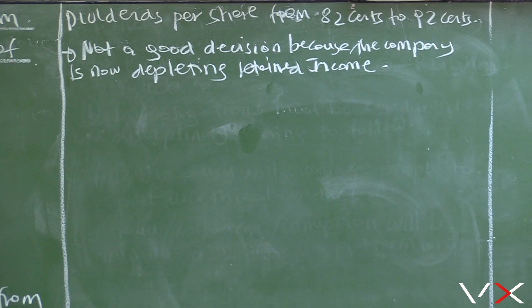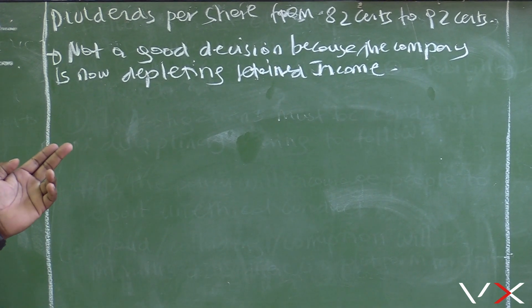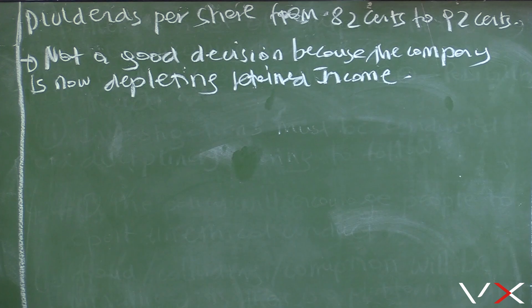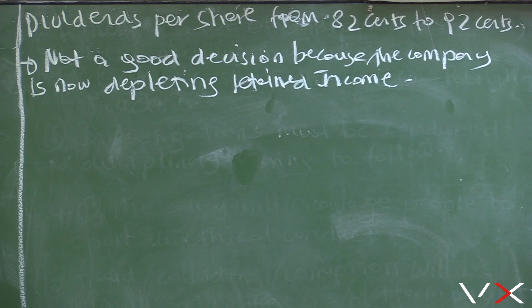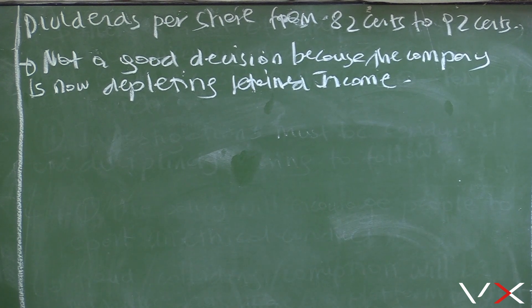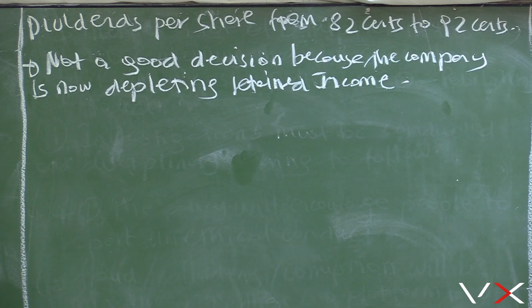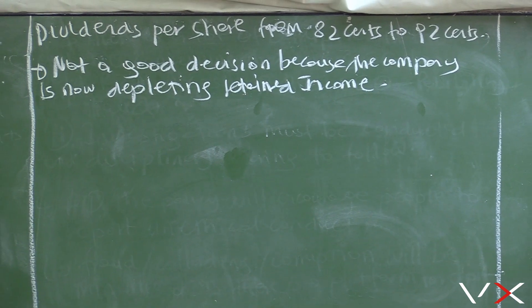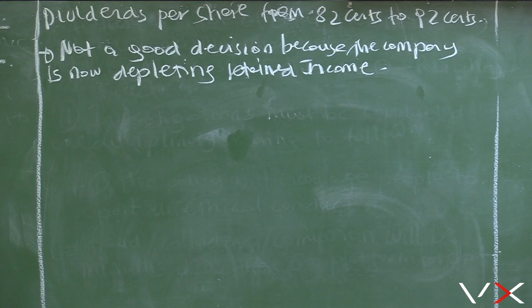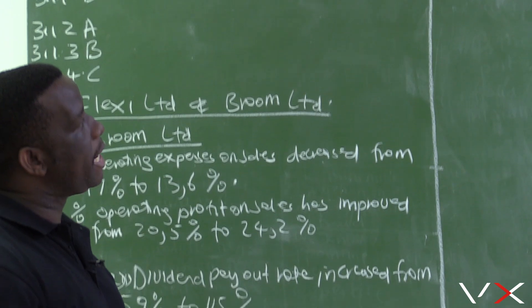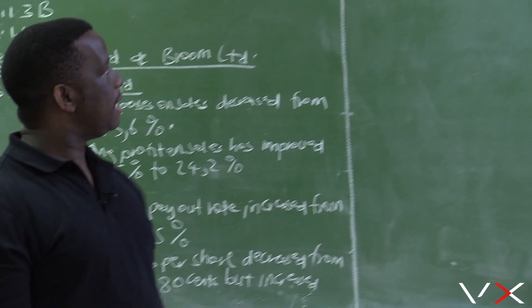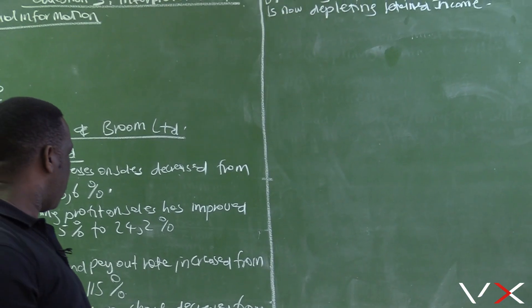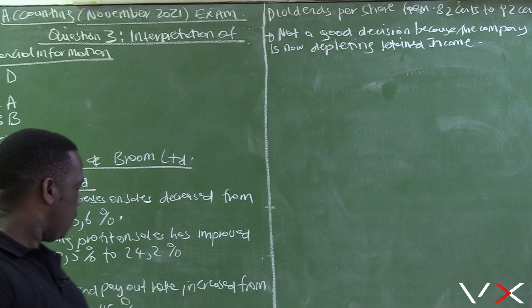This is not a good decision. You can see that earnings per share has decreased, but at the same time the directors have decided to increase dividends from 82 cents to 92 cents. The company is now depleting the retained income, because if you are paying dividends of 92 cents when the earnings per share is only 80 cents, the extra 12 cents must come from retained income.